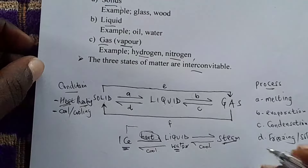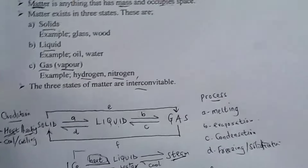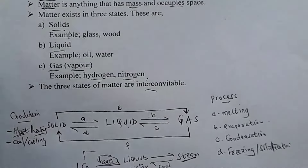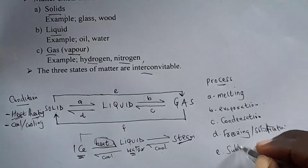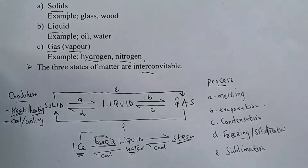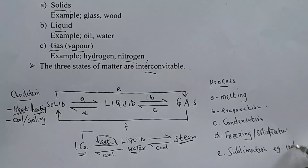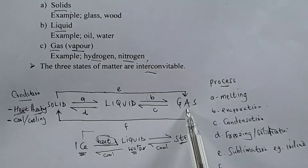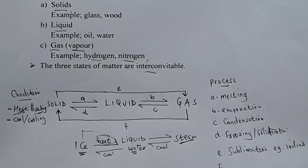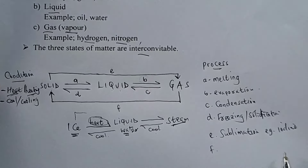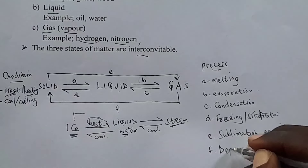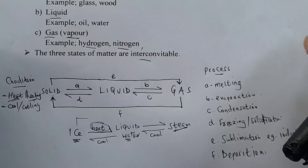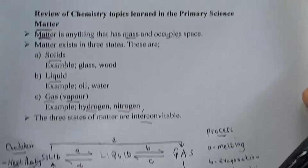Next, process E is when you have a solid changing directly to a gas — that process is called sublimation. Remember, we have some substances that do sublime; one of them is iodine, which is one of the substances that undergo sublimation. Process F is from gas going back directly to a solid. In primary school you may have called it sublimation, but in secondary school that process is called deposition.